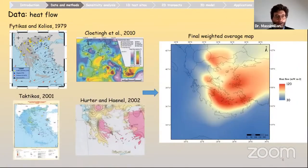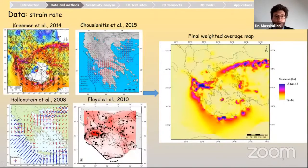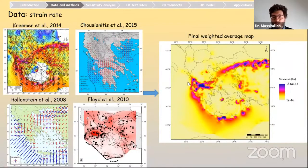For the heat flow data, we took into account data from different scales and sources and obtained a final weighted-average map highlighting the highest values along the volcanic arc. Similarly for the strain rate — again from different sources merged into a final weighted-average map — highlighting the concentration of strain along the main deformational belts.